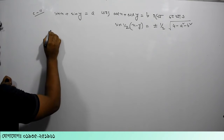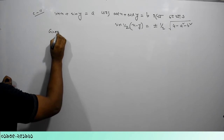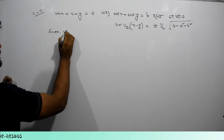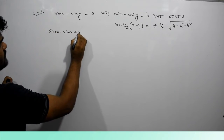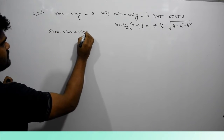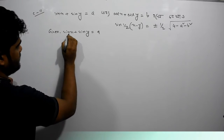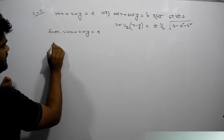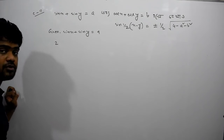What are the given data? Given: sin x plus sin y equals a, and sin c plus sin d equals zero.